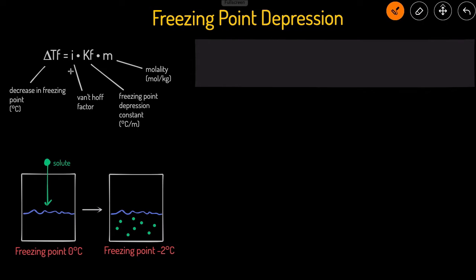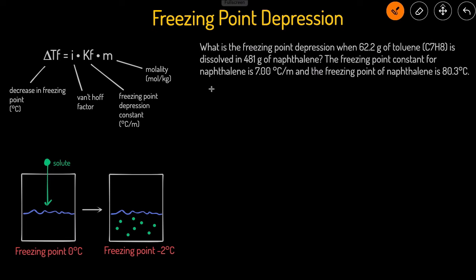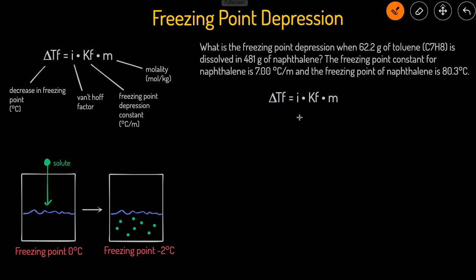Now let's take a look at an example of how we can use this equation. This problem is asking us: what's the freezing point depression when 62.2 grams of toluene is dissolved in 481 grams of naphthalene? This gives us the freezing point depression constant, as well as the freezing point of the naphthalene before we dissolve the toluene. So we're expecting that after dissolving the toluene, the new freezing point will be lower than the original freezing point of 80.3 degrees Celsius.